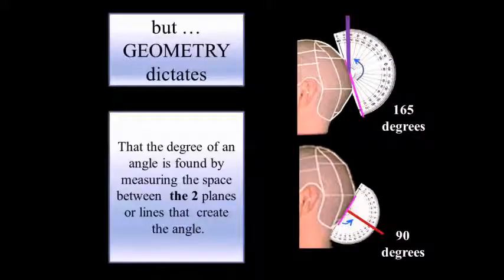But geometry dictates that the degree of an angle is found by measuring the space between two planes or lines that create the angle.